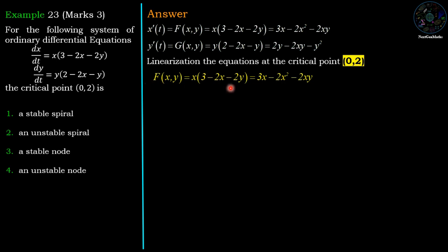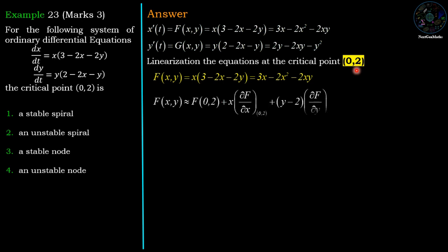We have f(x, y) = 3x − 2x² − 2xy. We approximate this function as a linear function at the point (0, 2) using the first two terms of the Taylor series, i.e., up to the first derivative. So f(x, y) ≈ f(0,2) + x · (∂f/∂x) evaluated at (0,2) + (y − 2) · (∂f/∂y) evaluated at (0,2).